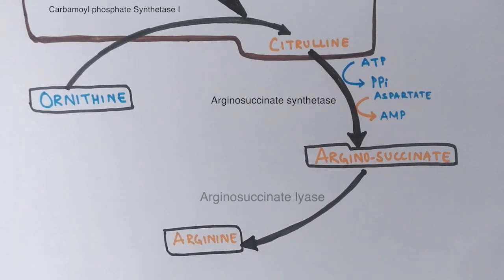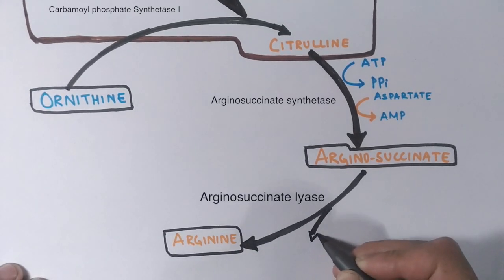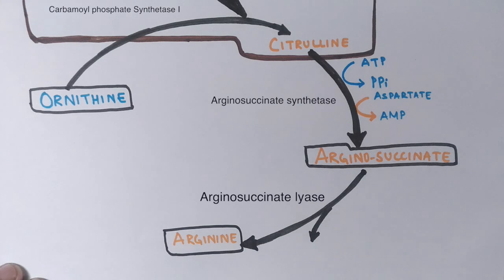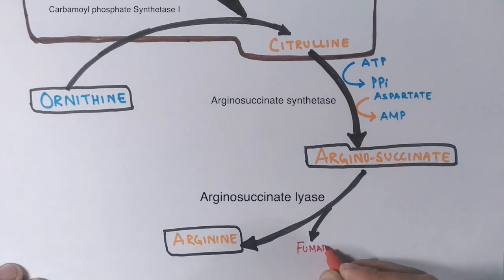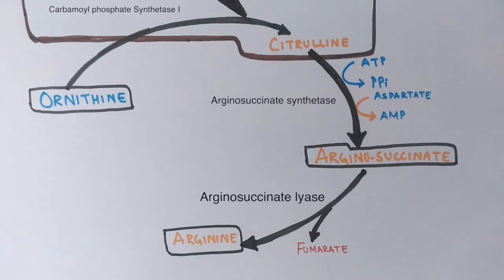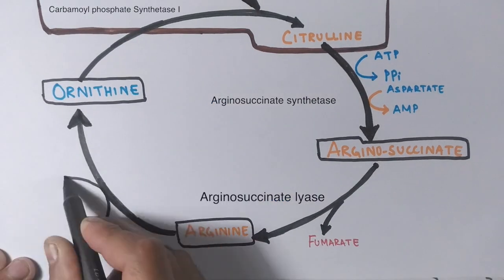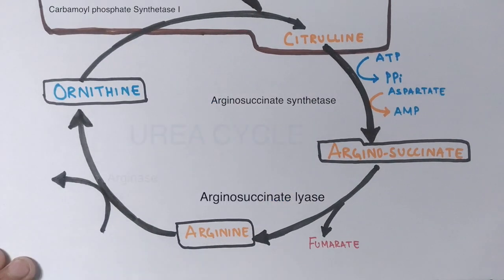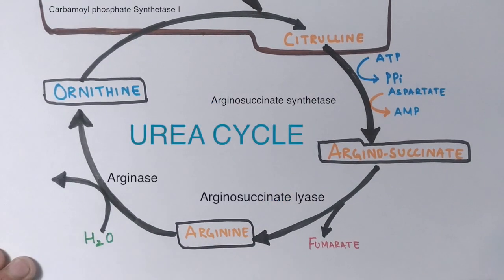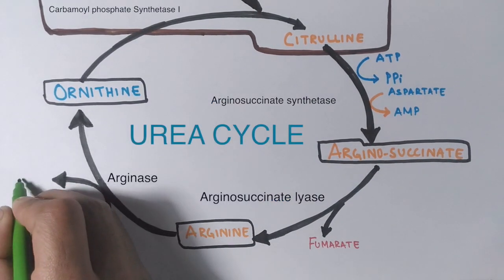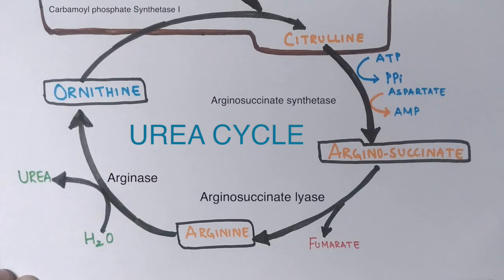In the next reaction, argininosuccinate is converted into arginine in the presence of a lyase enzyme called argininosuccinate lyase. In this reaction, fumarate is released, which then enters the citric acid cycle.